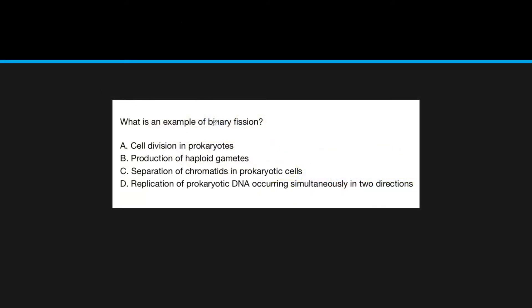So, this is an example question. What is an example of binary fission? Well, we have cell division in prokaryotic cells, or prokaryotes, that makes sense. Production of haploid gametes. Haploid is when, just like if you have the number of chromosomes, it's the base number. If you have diploid, it's two. So, the production of haploid gametes, that doesn't really make sense here, because this is usually when you're talking about eukaryotic cells. And we already know that binary fission is for prokaryotic cells. Separation of chromatids in prokaryotic cells. But, well, we already know that binary fission is kind of the division, so we know that it's not going to be C. And then, the replication of prokaryotic DNA occurring simultaneously in two directions. That, we'll learn later, is actually not binary fission, but a process that allows circular DNA to be copied. So, the best answer is A, cell division in prokaryotes.